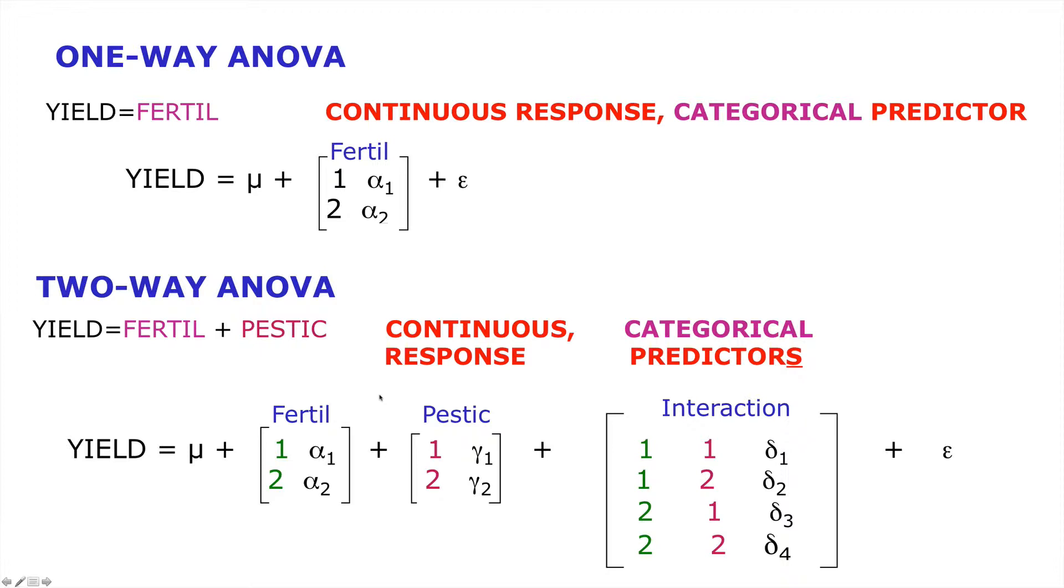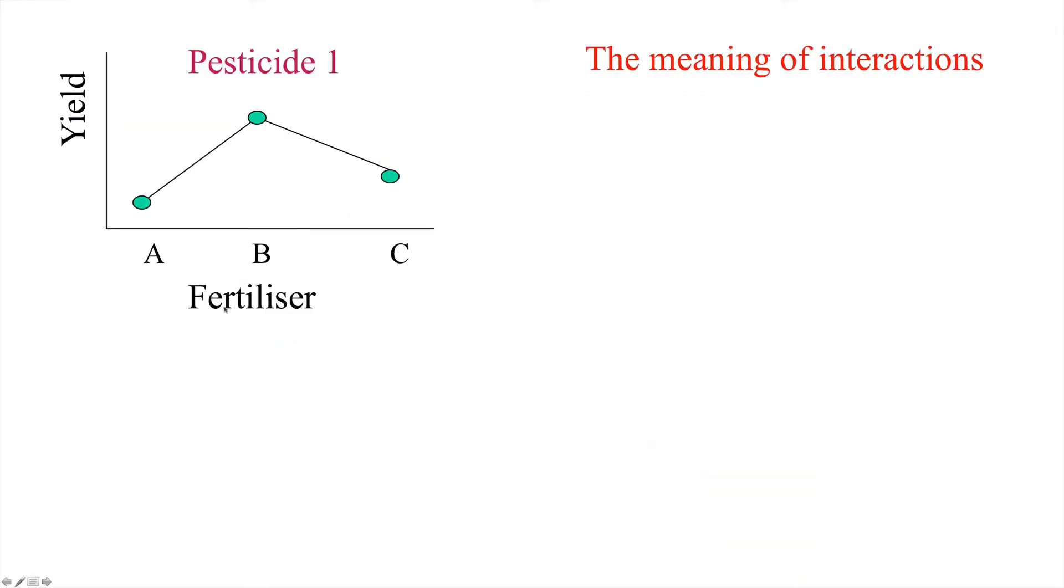Let's have a look graphically what we mean by an interaction. So let's say we've done an experiment in which we have varied the levels of the fertilizer. We have A, B and C and we have a response yield. And let's say that these points more or less represent what the population means are so they're pretty reliable. So here we can see that fertilizer B produces the higher yield when at least we have pesticide 1 applied. But when we have an interaction the effect of this fertilizer on yield depends on the level of this other categorical variable in this case pesticide.